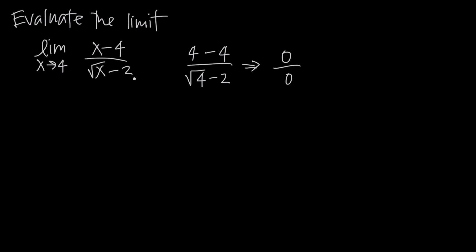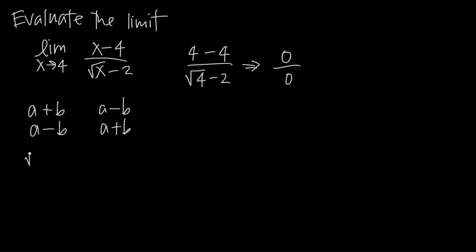It's called the conjugate method because we use the conjugate. The conjugate of an expression is just the same two terms with a different sign in the middle. For example, the conjugate of a plus b is a minus b — same two terms, just the sign changed from positive to negative. Likewise, the conjugate of a minus b is a plus b. So the conjugate of the square root of x minus 2 is the square root of x plus 2.